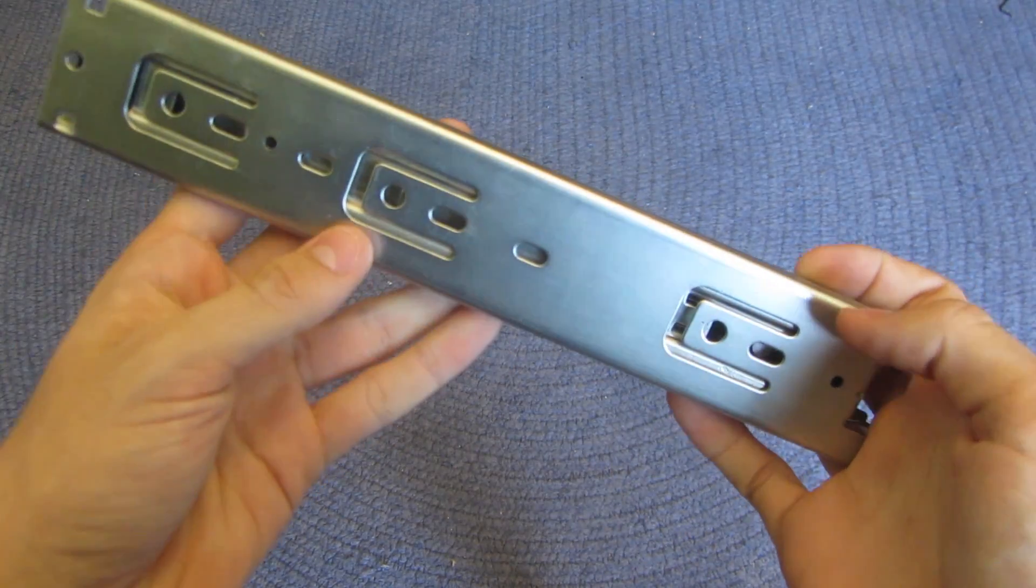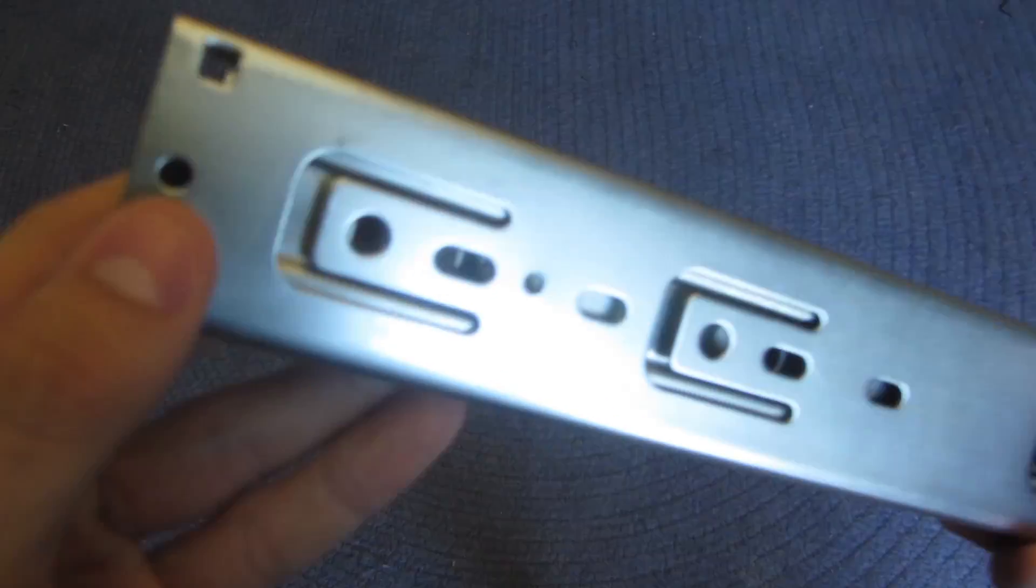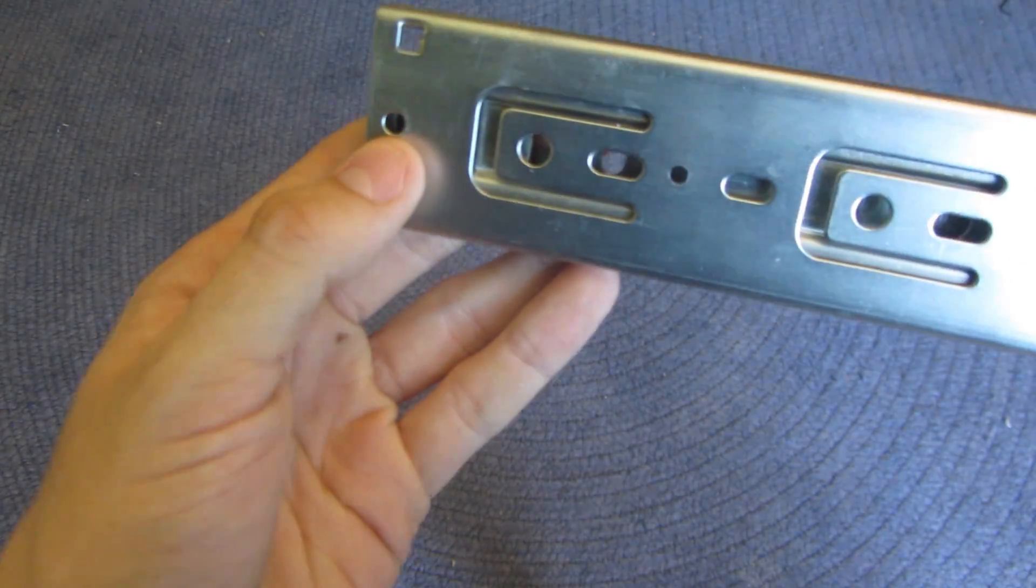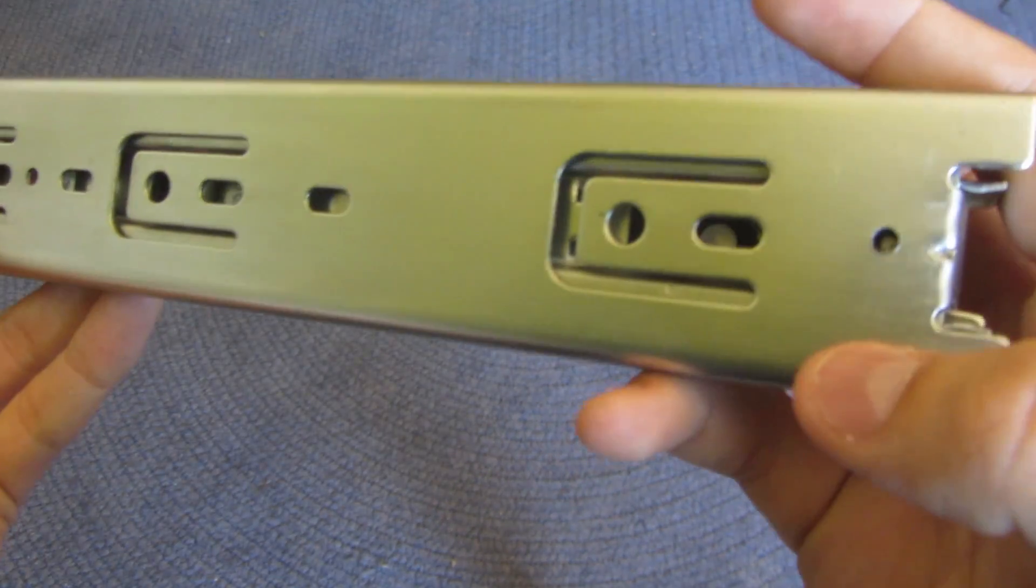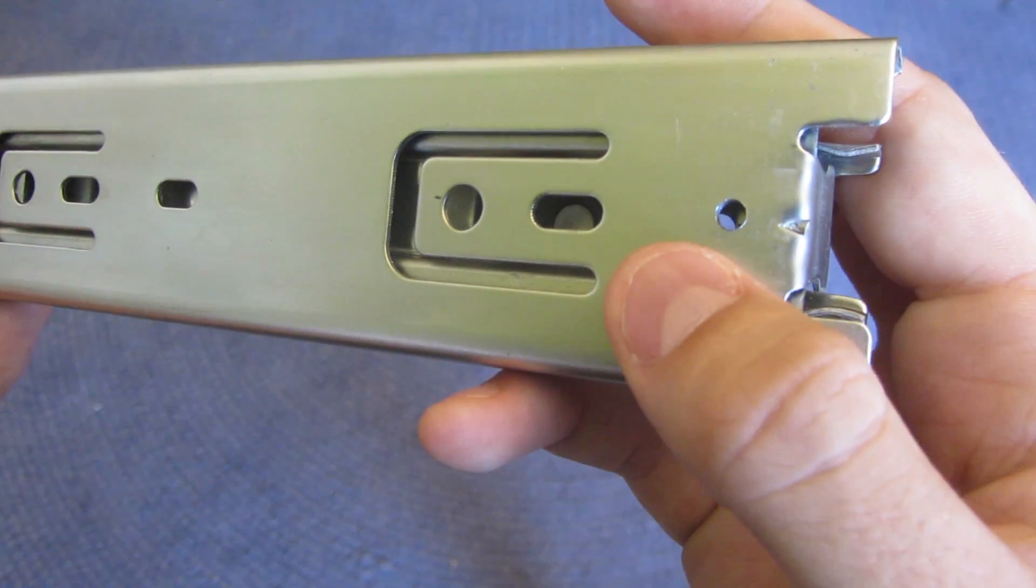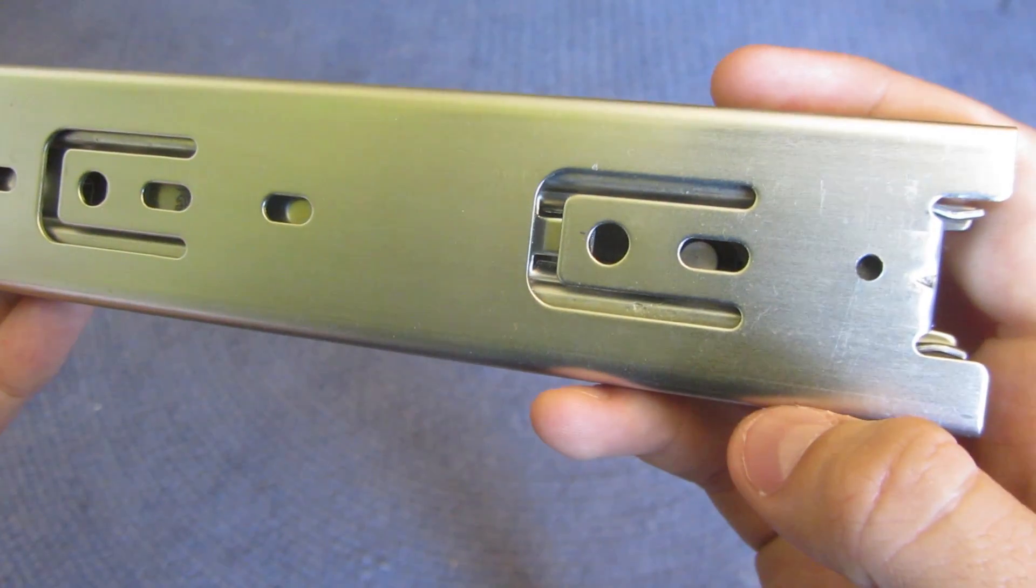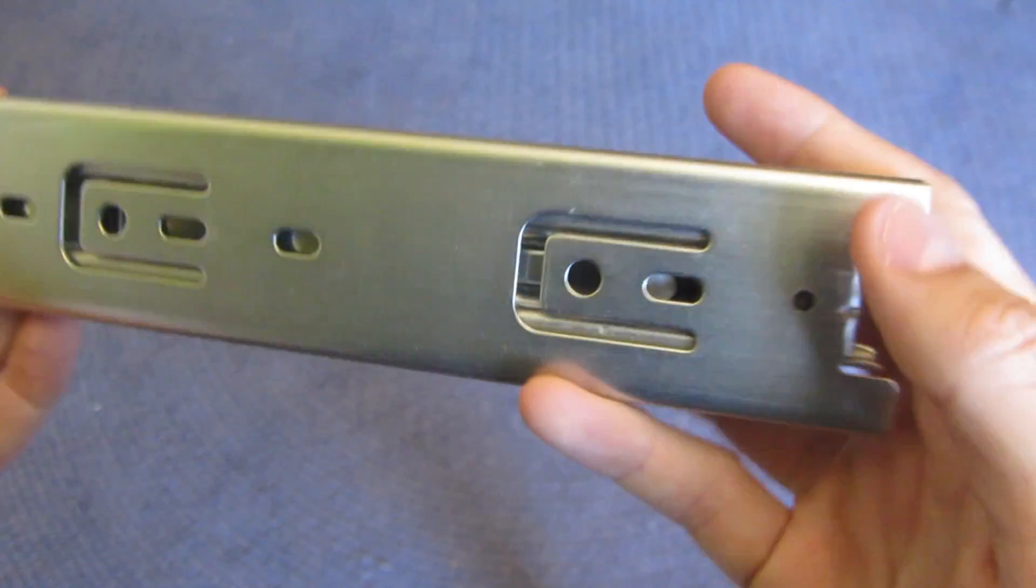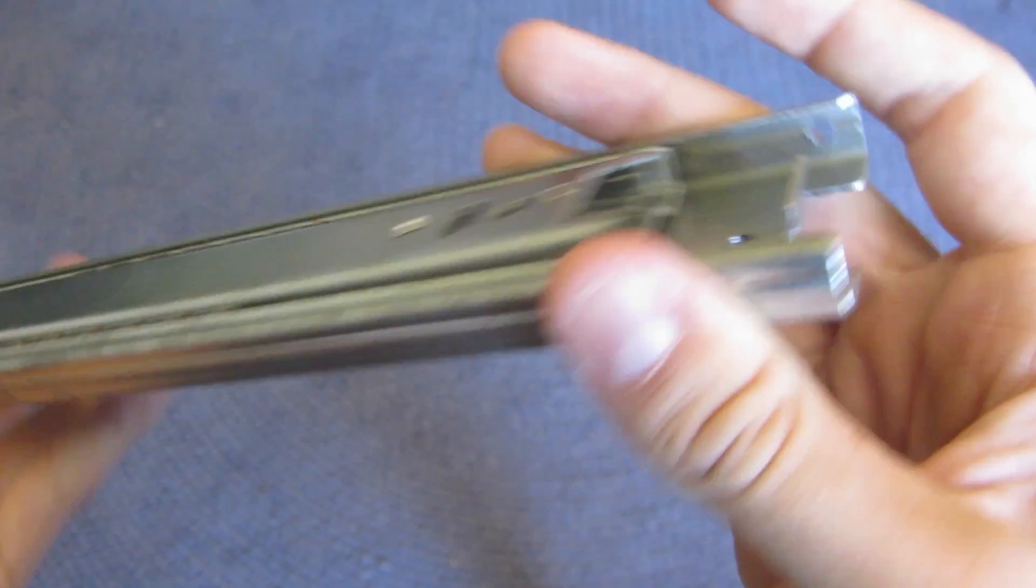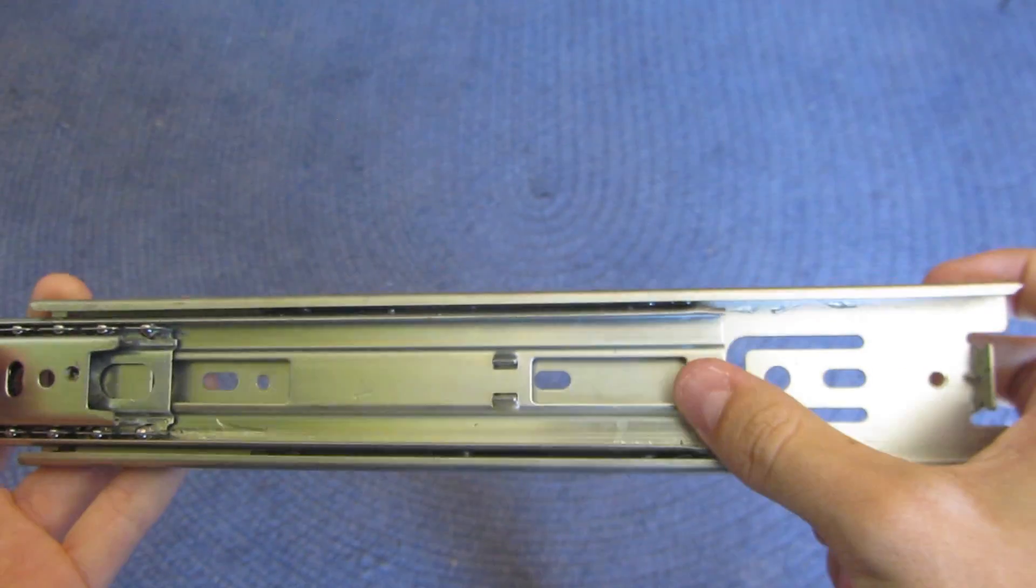So this is the back of one. We used this hole, this hole right here, and then we drilled a hole down here. We just drilled a hole that lined up with the holes on the other side and you want it to be centered so it doesn't hit any of the sliding parts.